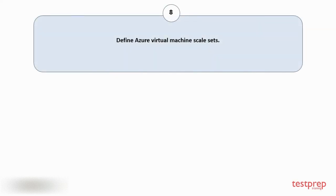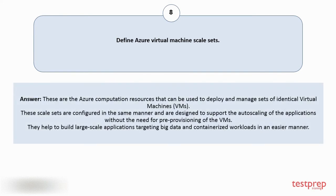Question number eight: define Azure virtual machine scale sets. Your answer is: these are Azure computation resources that can be used to deploy and manage sets of identical virtual machines. These scale sets are configured in the same manner and are designed to support auto-scaling of applications without the need for pre-provisioning of VMs. They help to build large-scale applications targeting big data and containerized workloads in an easier manner.